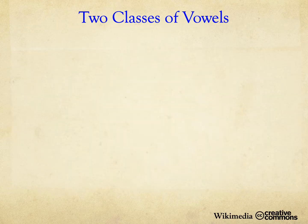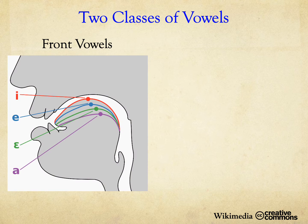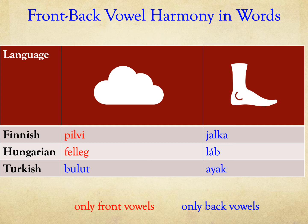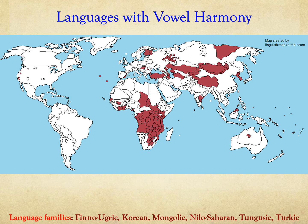Our algorithm considers two classes of vowels. Many languages have a front-back vowel harmony. For example, in Finnish, Hungarian, and Turkish, the words for cloud and foot have vowel harmony — that is a feature for most of the basic words in these languages. Vowel harmony is a characteristic of many language families, including Finno-Ugric, Korean, Mongolic, Nilo-Saharan, Tungusic, and Turkic language families.